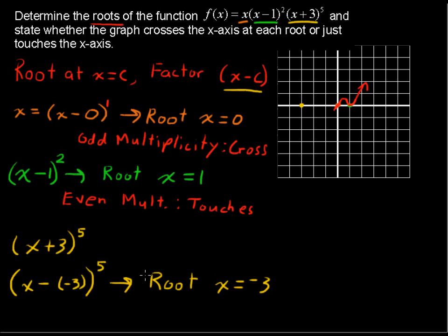Next, when x equals negative 3, we have an odd exponent on the factor. So again, we have odd multiplicity. And I'll write that down. That means odd multiplicity means that the graph will cross the x-axis at that point of x equals negative 3. So it's going to go down like this.